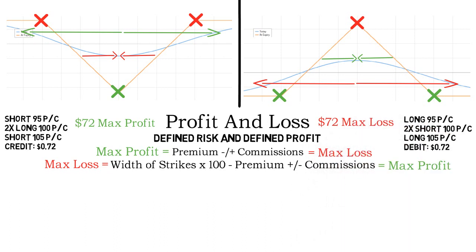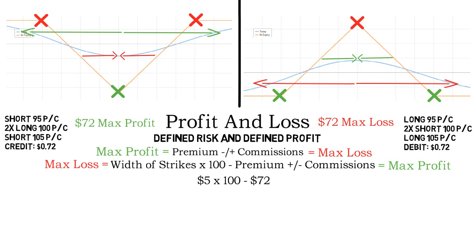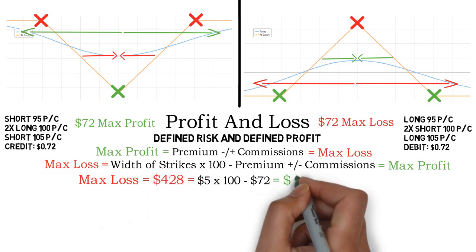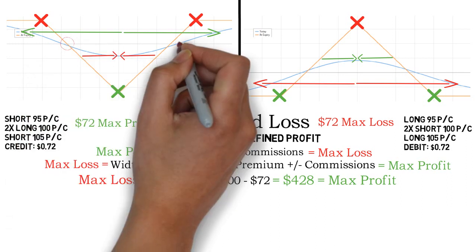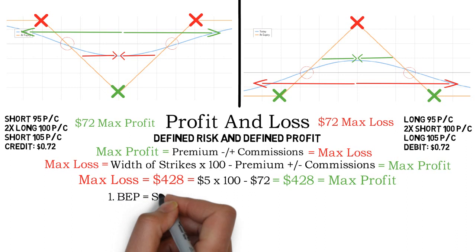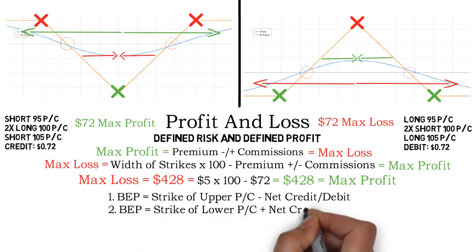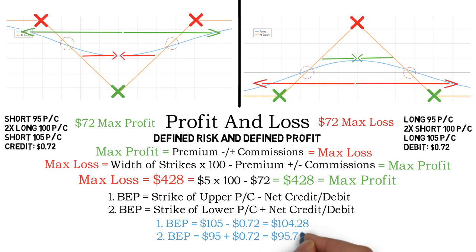For the next calculation, we have to find the width of the strikes first. The difference between the at the money strikes and one of the outer options is 5, so the width of the strikes is 5 for both spreads. Now we multiply 5 by 100 and subtract the premium of $72. The result is $428, which is the max loss for the short butterfly spread and the max profit for the long butterfly spread. The breakeven points for our spreads are $104.28 and $95.72.